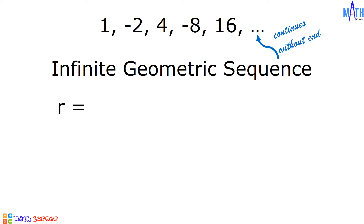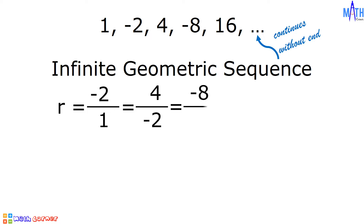Again, to determine the common ratio, we will divide any term by its preceding term. Negative 2 divided by 1, 4 divided by negative 2, negative 8 divided by 4, 16 divided by negative 8 — the answer is equal to negative 2. The common ratio is equal to negative 2.